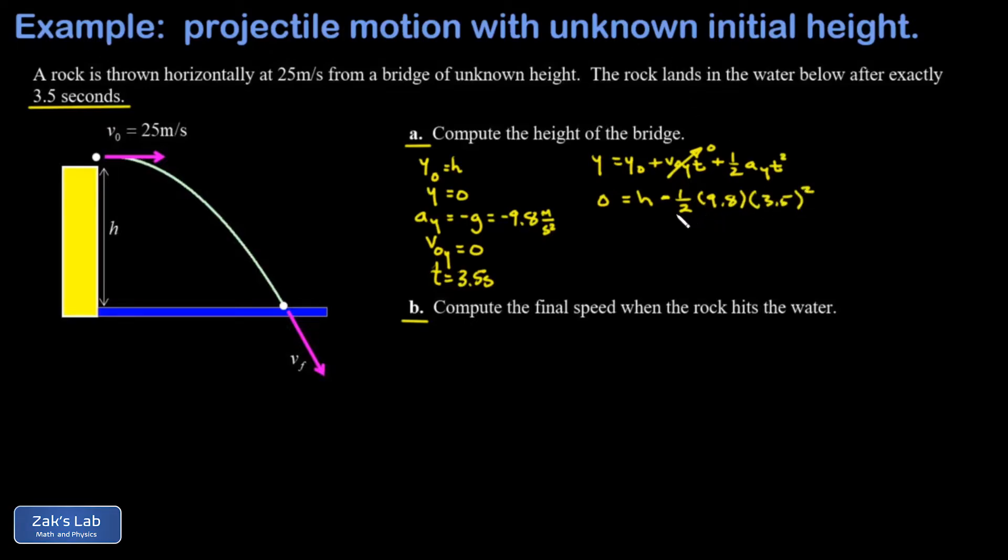So I can smash the numbers here. One half times 9.8 times 3.5 squared. Move that to the other side of the equation. And I've got H. And to three significant digits, I get 60.0 meters.